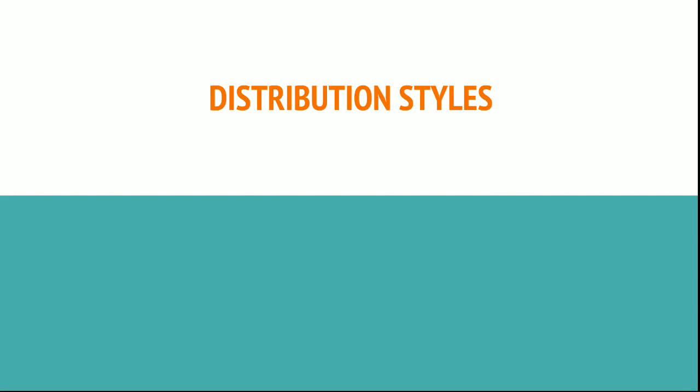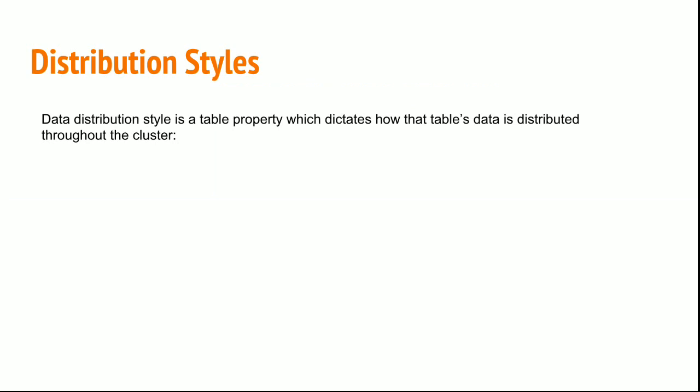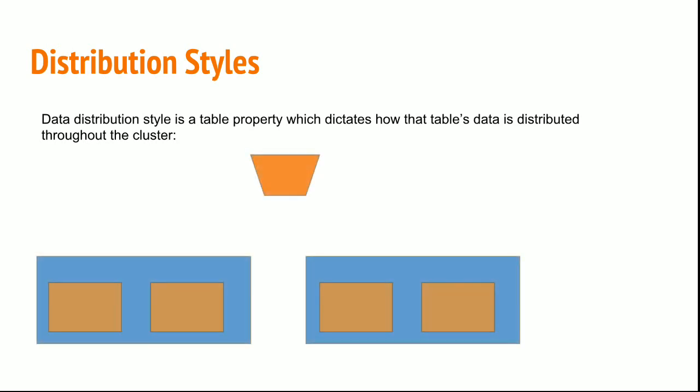Welcome, let's discuss distribution styles in Redshift. Data distribution style is a table property which dictates how the table's data is distributed throughout the cluster. If I have a table issued to a cluster, then the data is distributed across all the slices in the nodes.